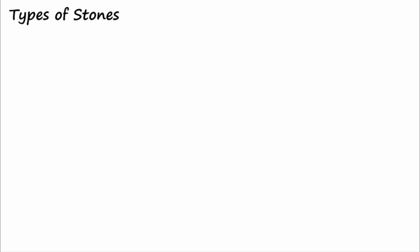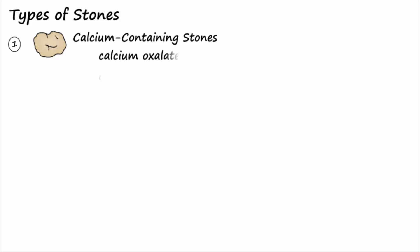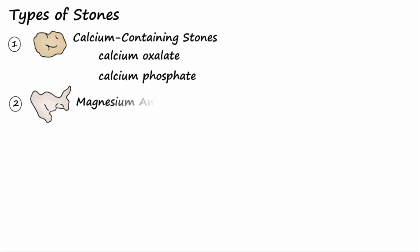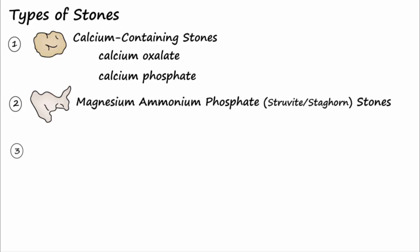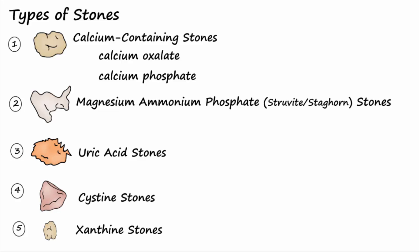Primary types of stones that form, from the most common to least common, are calcium-containing stones, including calcium oxalate and calcium phosphate; magnesium ammonium phosphate, also called struvite or staghorn stones; uric acid; and finally cysteine and xanthine stones, which are quite uncommon.